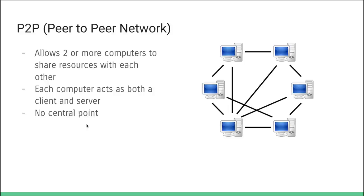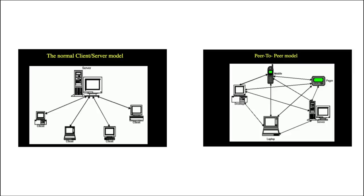A great real-life analogy is speed dating versus a dating website. On a dating website, you put information into a centralized repository and communicate only through that website. With speed dating, there's no intermediary — you meet individual people directly with no central system. Similarly, the normal client-server model has everything passing through a central point, like airport check-in kiosks reporting to a central computer. In the peer-to-peer model, everyone communicates with everyone else — no centralized server.